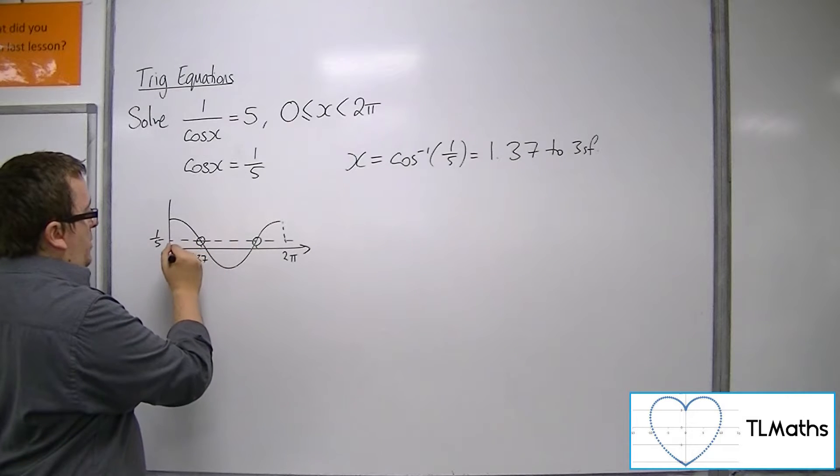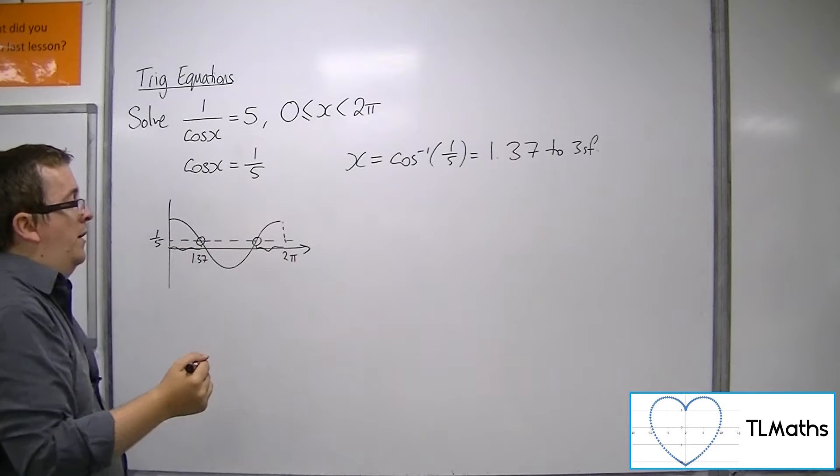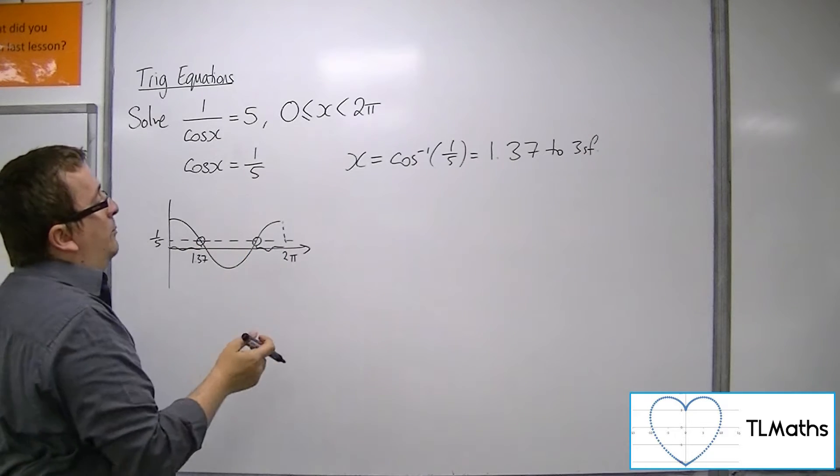The other result can be found by subtracting that from 2 pi, because those two distances must be the same.